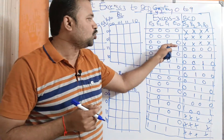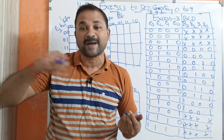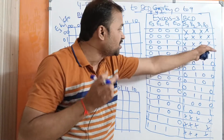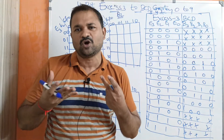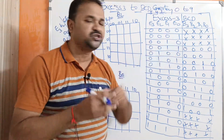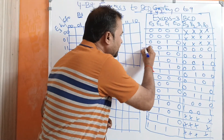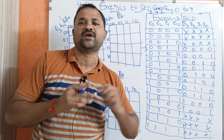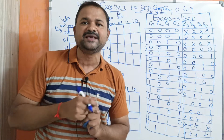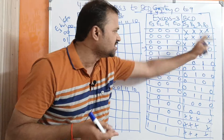Next, 0011 — what is 0011? That is 3. The actual XS3 code starts from 0011. So 0011 means 3; in order to get the BCD, we subtract 3: 3 minus 3 means 0. So 0 in binary notation is all zeros.